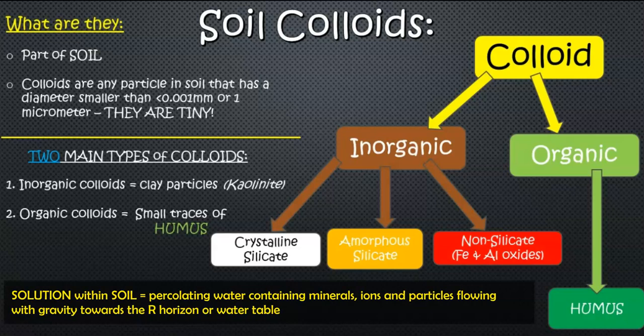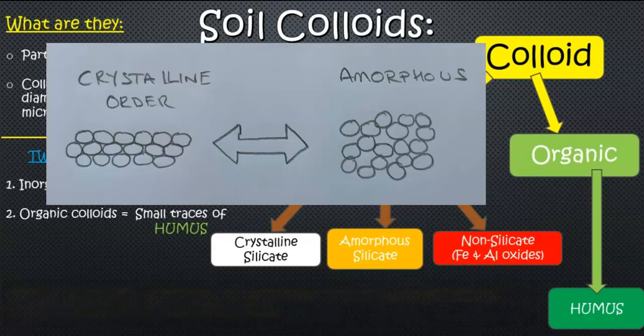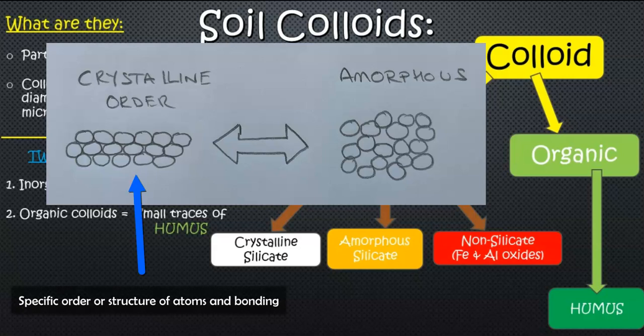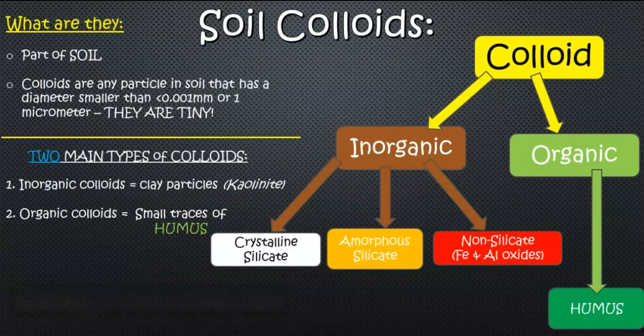We can simplify the organic colloid down to just humus, but for inorganic, there are different types of clay minerals. You have crystalline silicates — when you hear crystalline, think mineral — which have oxygen and silicon in the chemical formula in a designated pattern of elements and bonds. You have amorphous silicates, which are non-crystalline and can have a more generalized shape. And you also have non-silicate types, which are the iron and aluminium oxides, also present in certain soils.